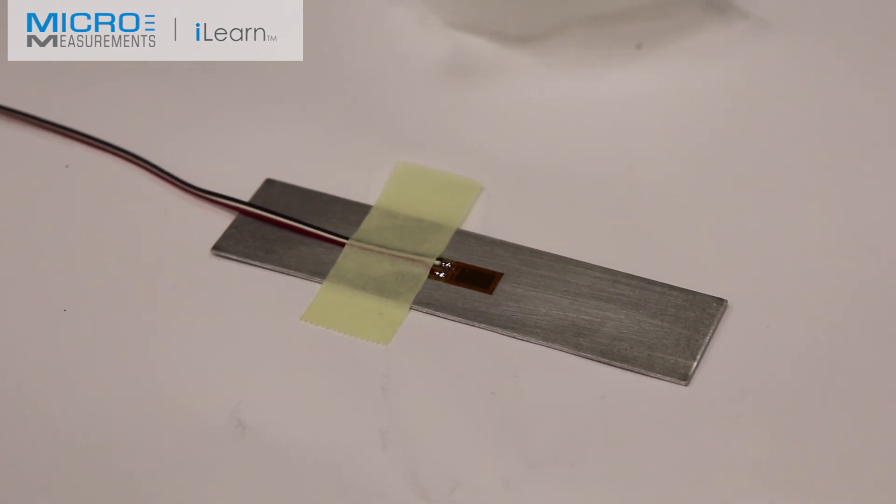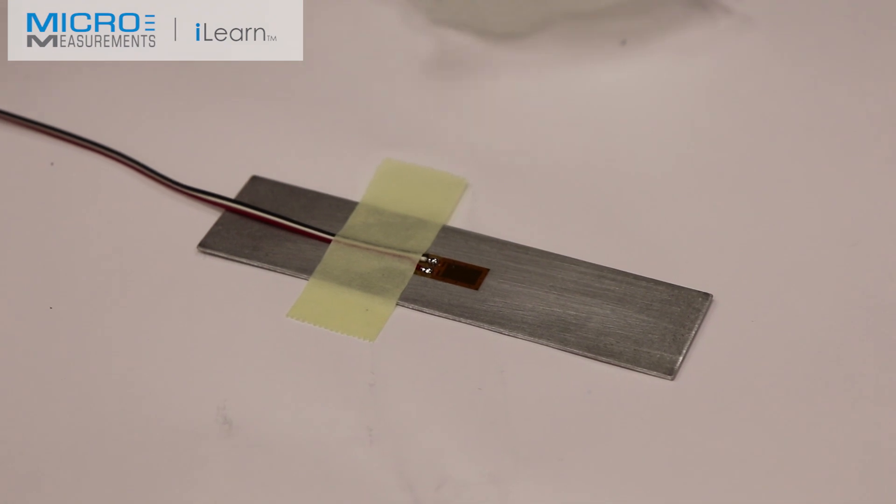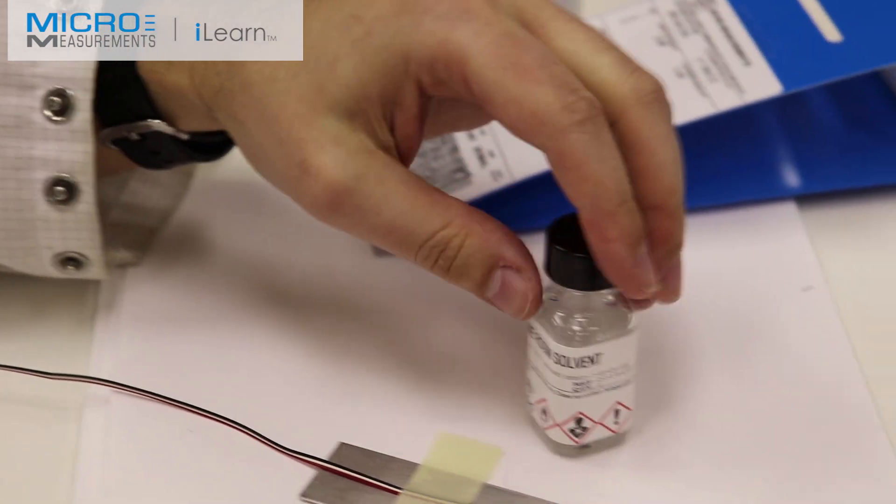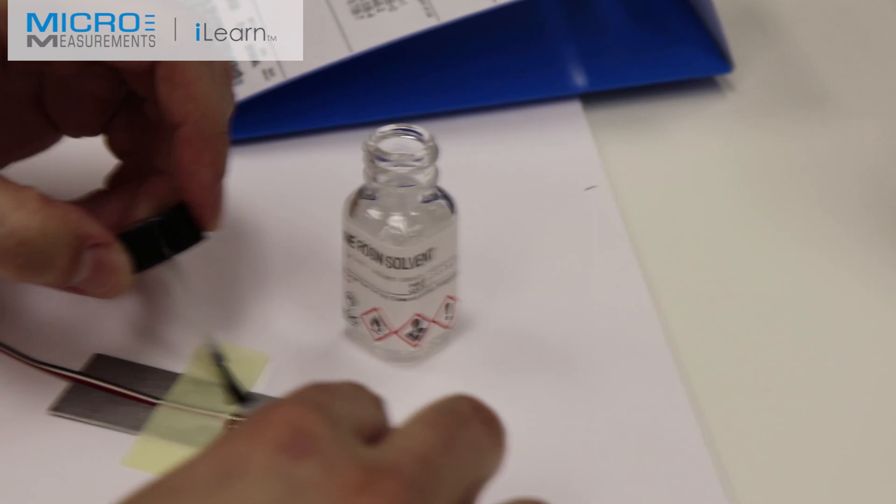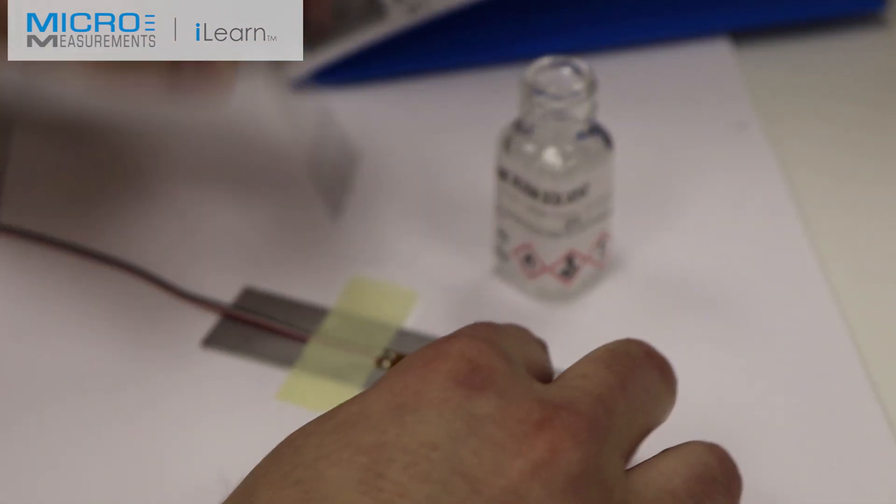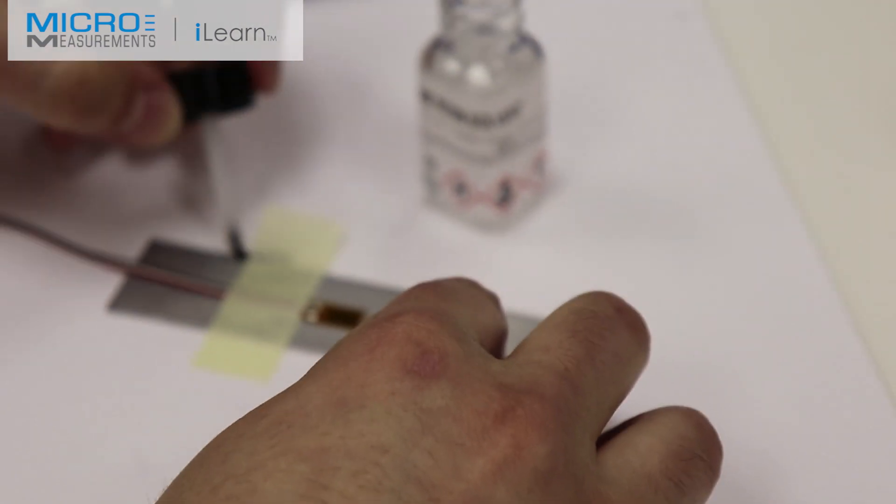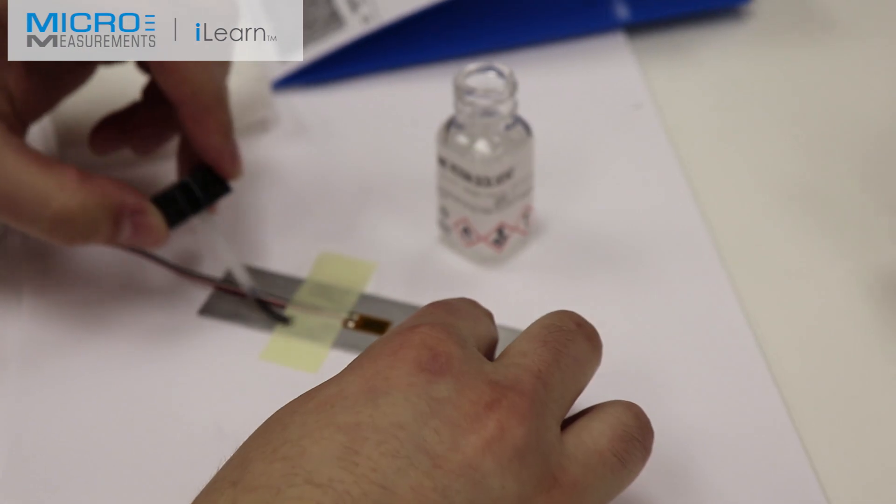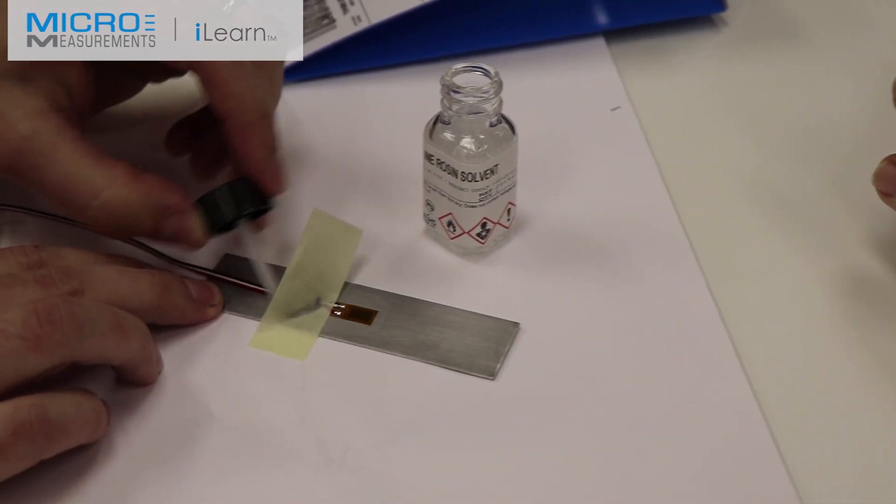Having completed the soldering operation, we're now going to use our rosin solvent to remove the paper drafting tape and also to break down the flux so that we can blot it away. He's going to flood the surface with the rosin solvent, which breaks down the mastic and begins to liquefy the flux. Notice he's using just the bristles of the brush to remove the paper drafting tape.